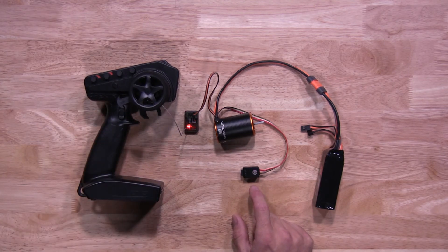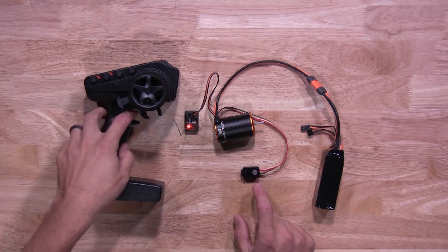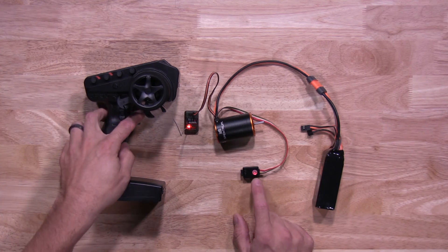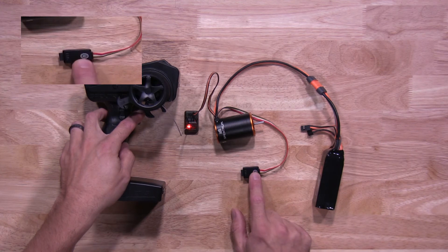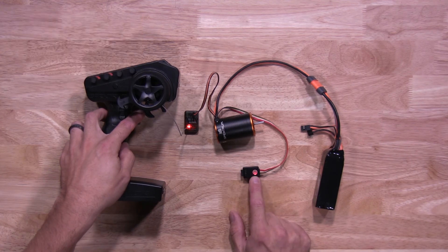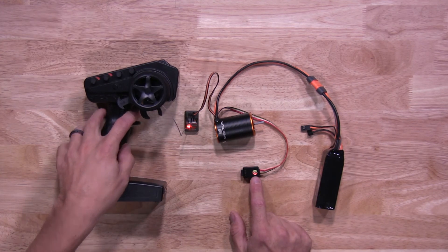Now it's time to set full brake slash reverse. So hold full brake down. You'll be hitting your on-off button one time. You'll see three green flashing lights to let you know that setting's being saved. Once you're done with that, let go of the trigger.